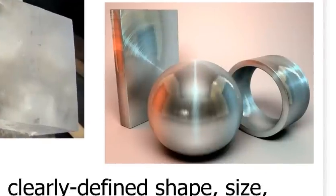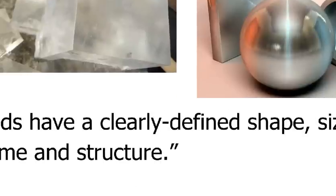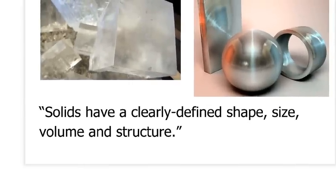That was a crystal. Here we've got metals — another very common example of a solid material. Crystals and metals make up most solids, not all, but most. There are various pieces of metal in different shapes, but each has a very specific shape. The point about solids is that they have a clearly defined shape, clear size, a very definite volume, and a very definite structure.